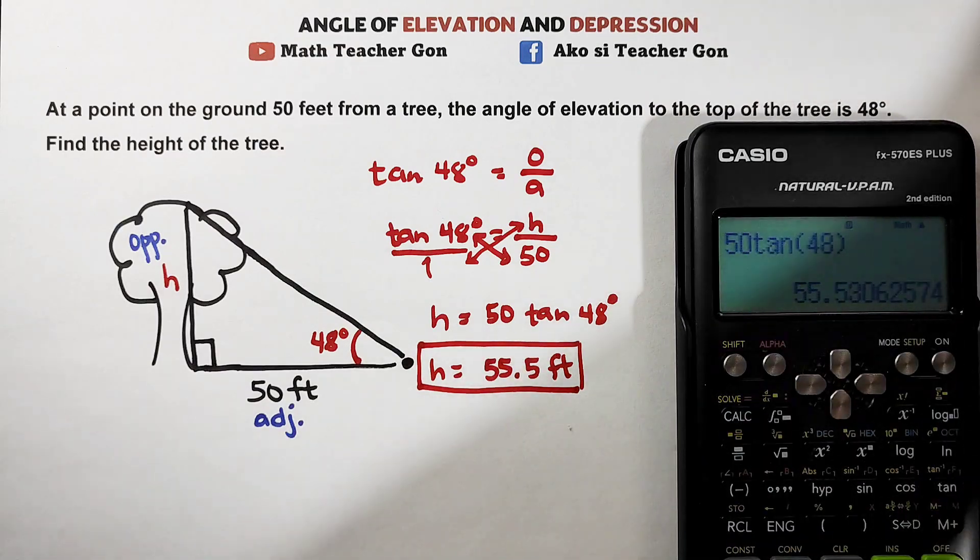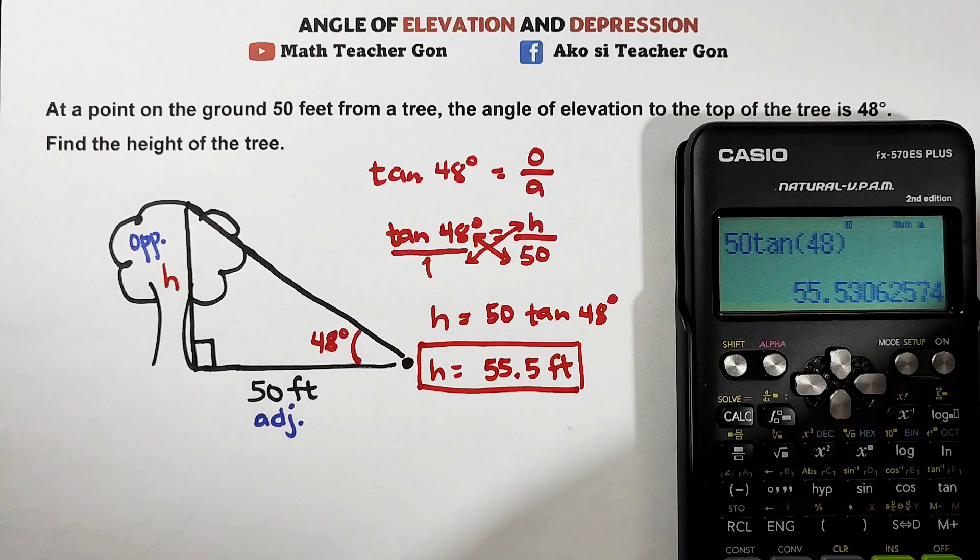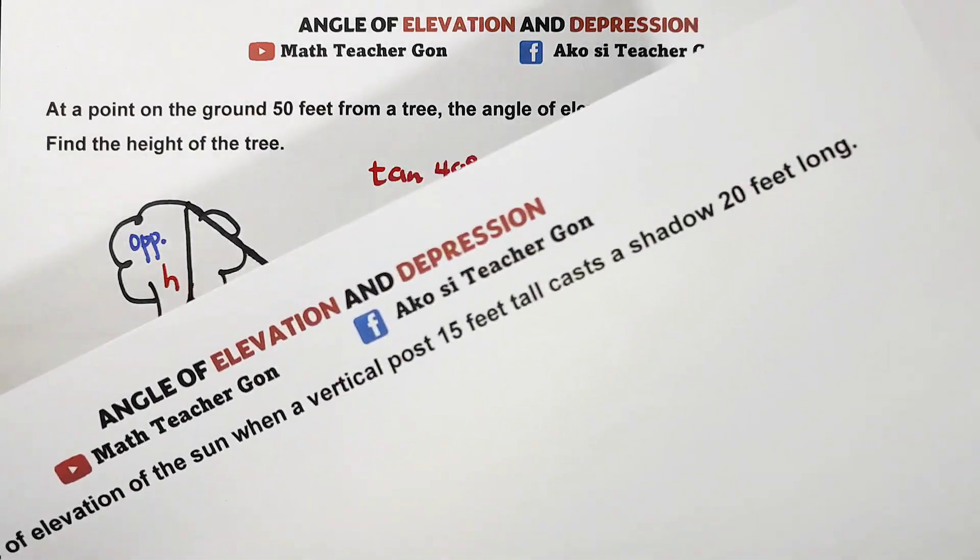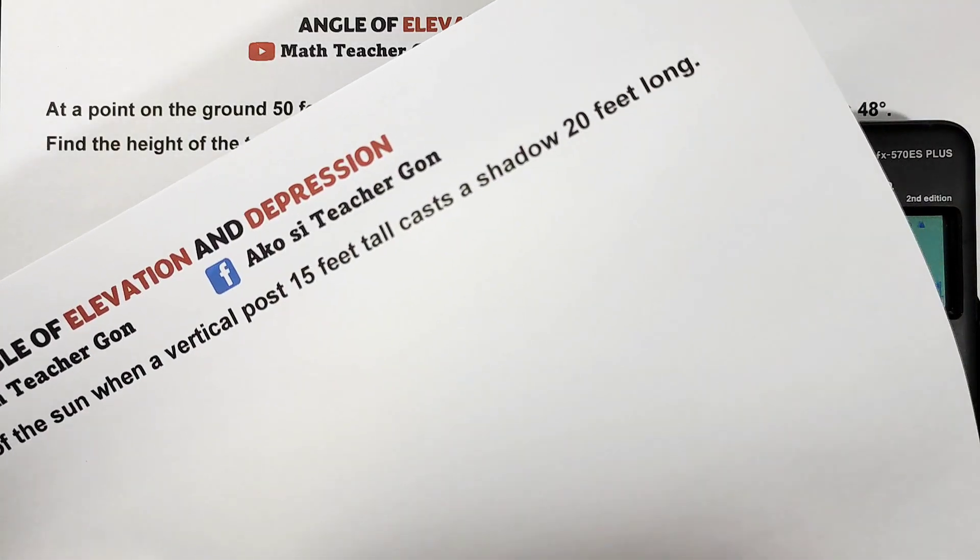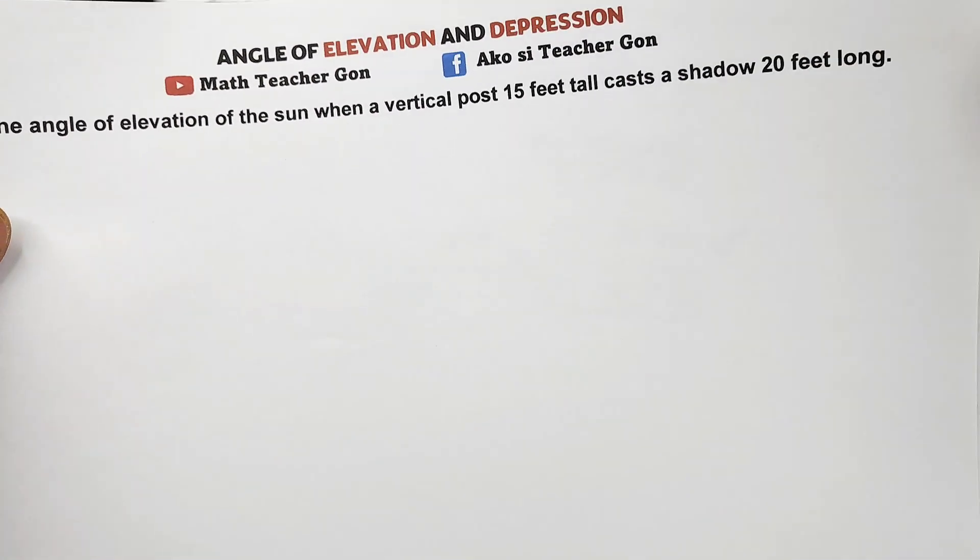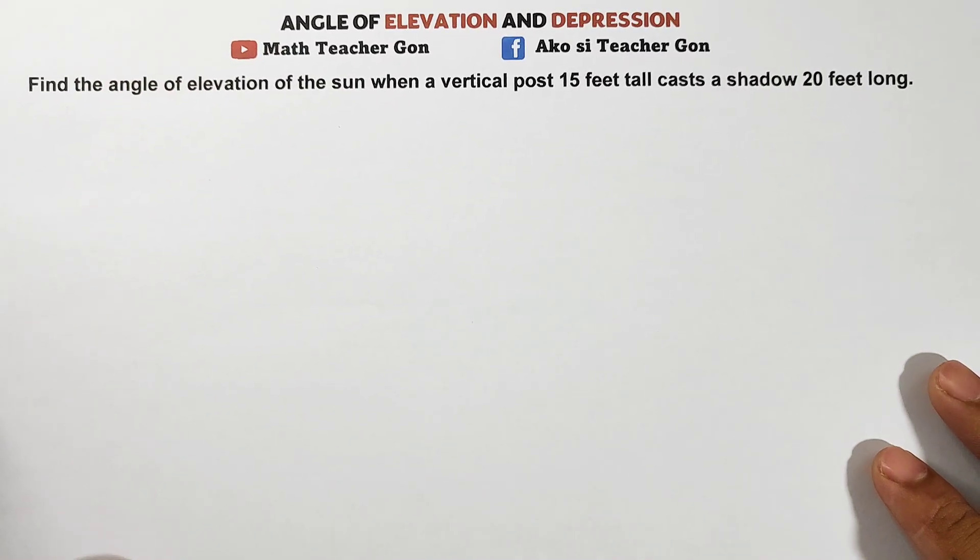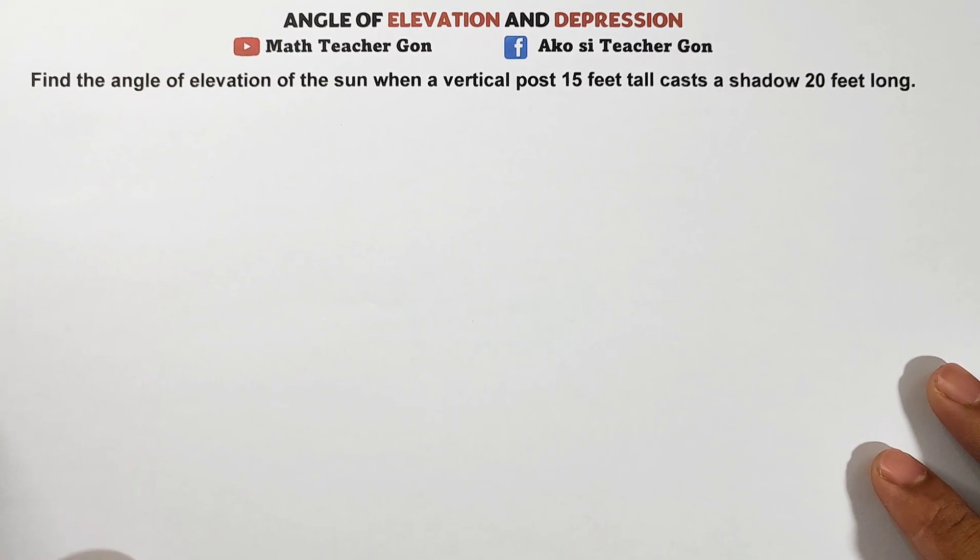Now let's move on with the next problem to practice more. So let's try this next problem. For the next problem, it says find the angle of elevation of the sun when a vertical post 15 feet tall casts a shadow which is 20 feet long.